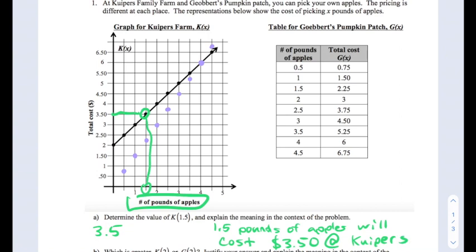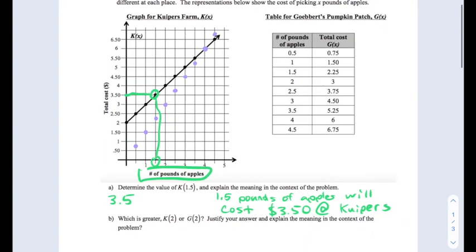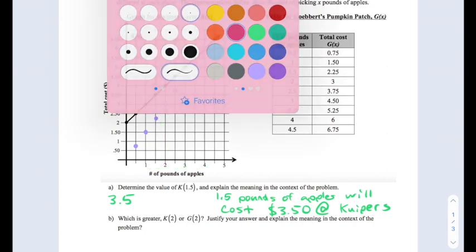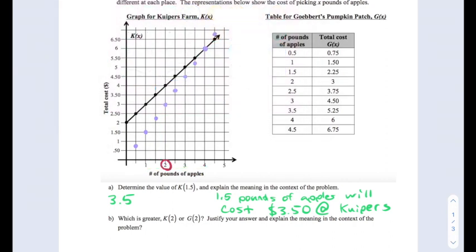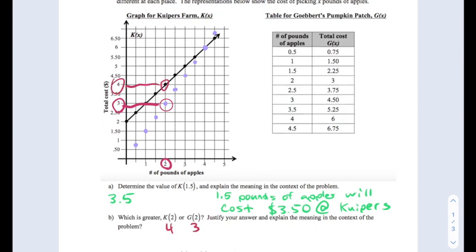Next question is our first comparison question where they ask us which is greater: k(2) or g(2). So we're discussing the input of 2 going into both the k function and the g function. Remember that these points here represent g while these points in black represent k. So g(2) is at 3 where k(2) is at 4.